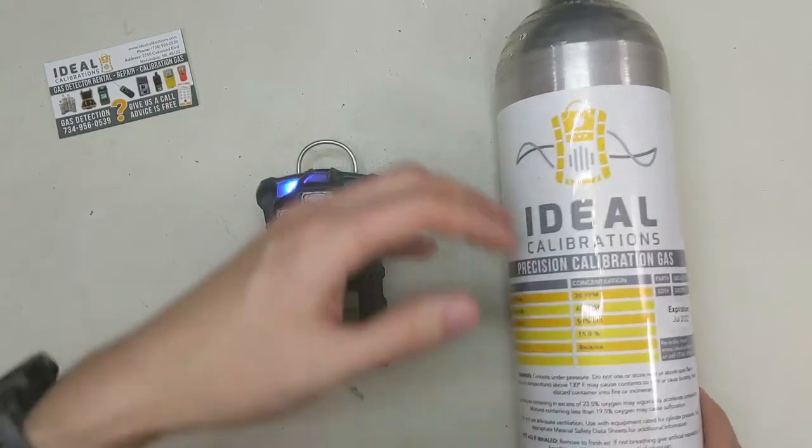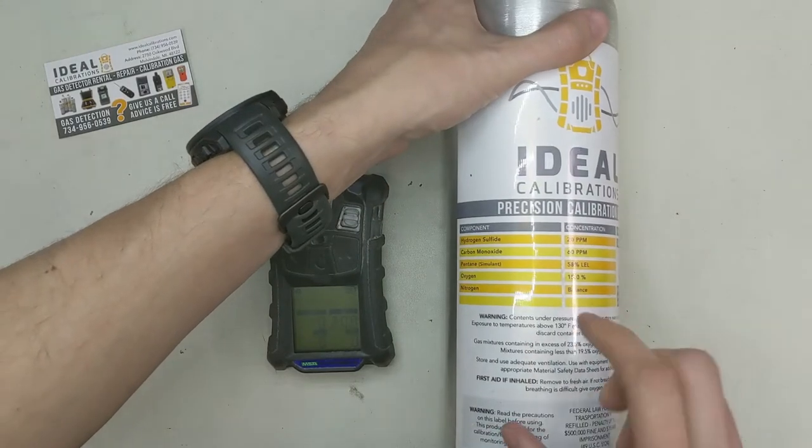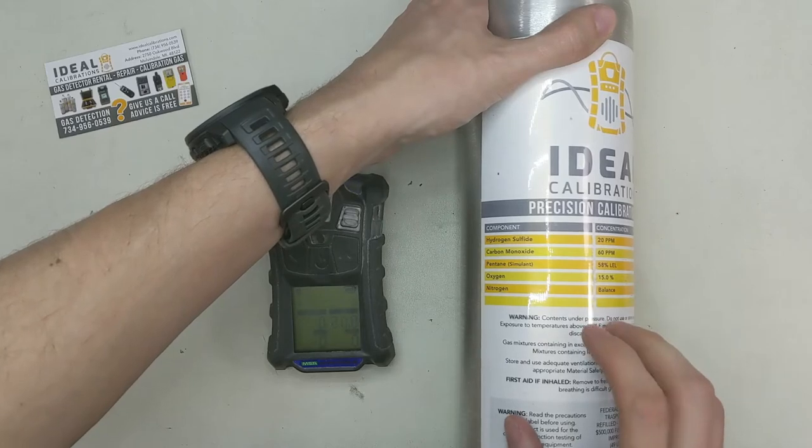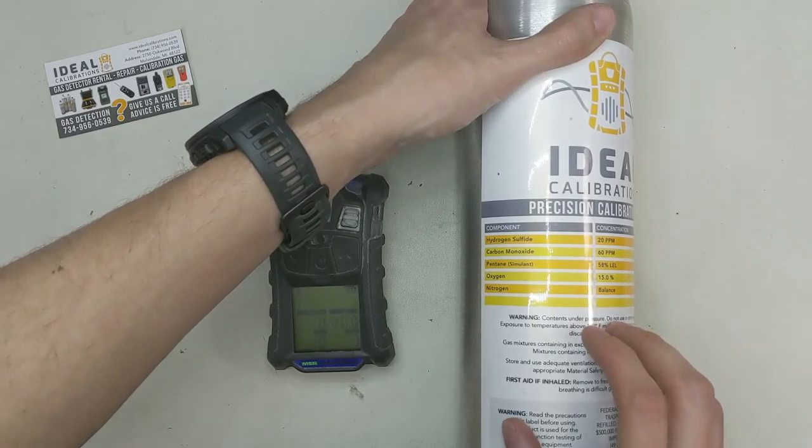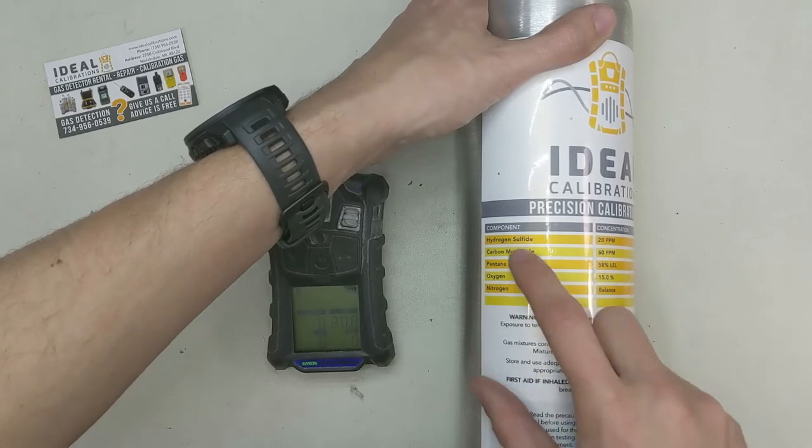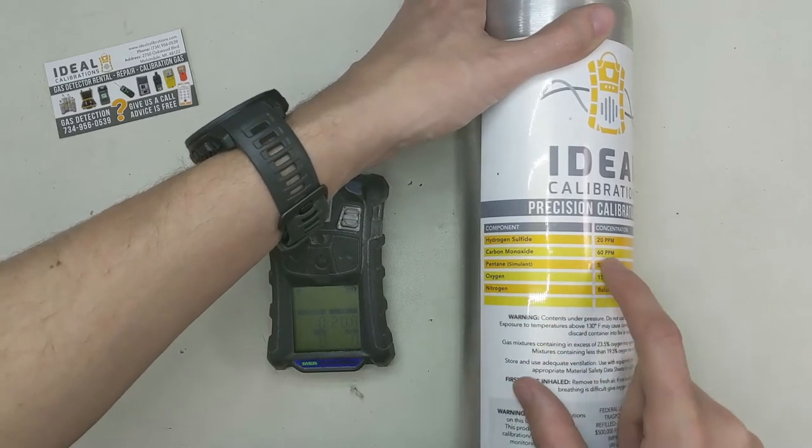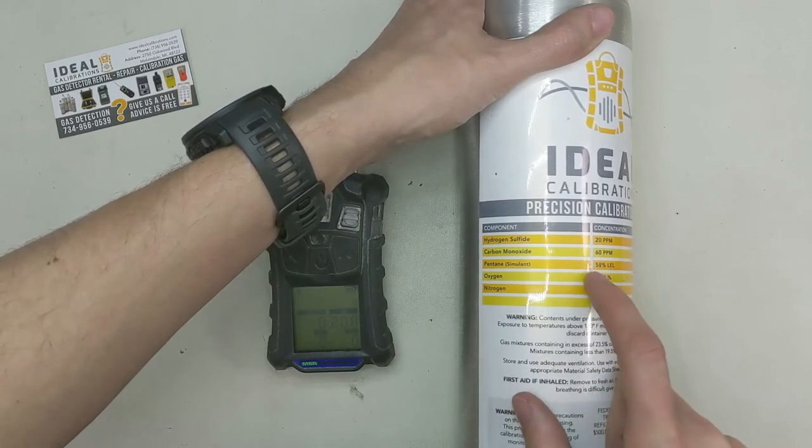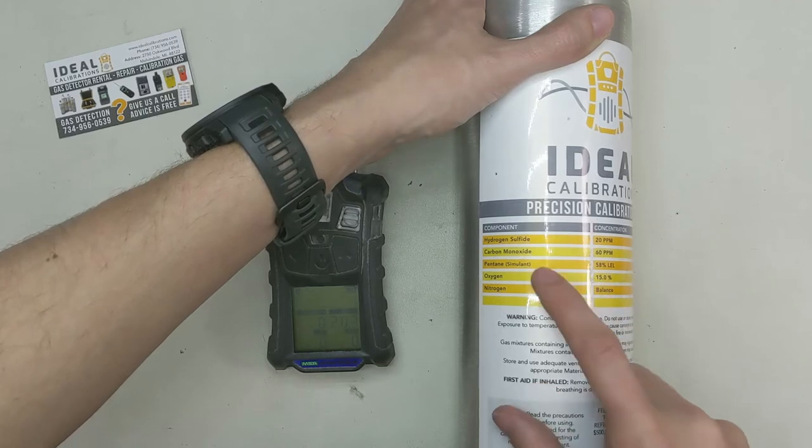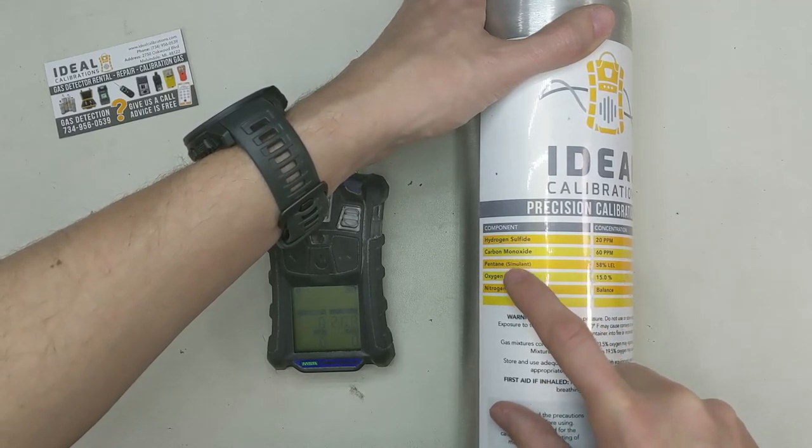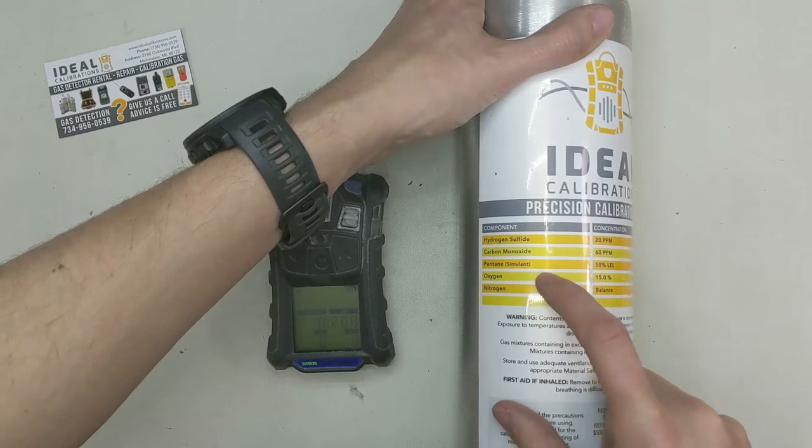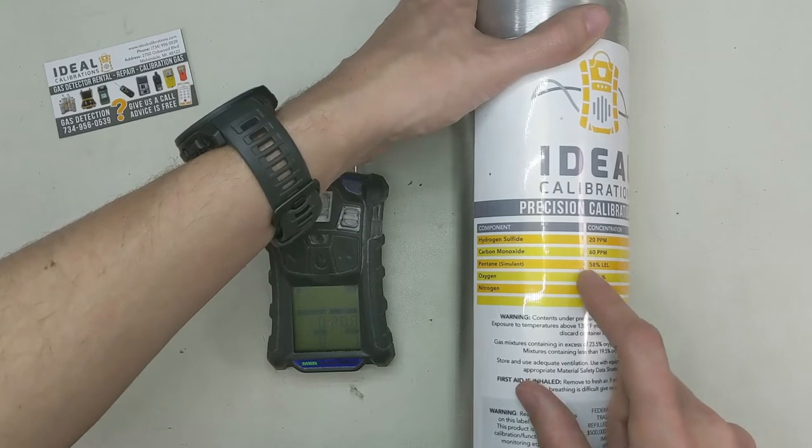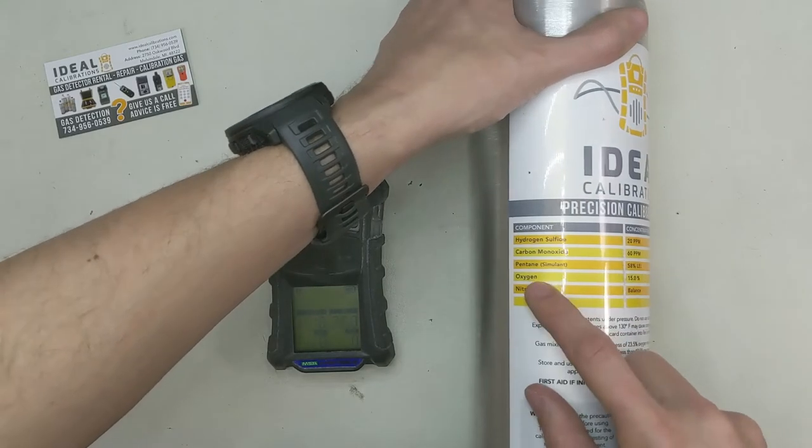Speaking of the gas, let's make sure you have the right cylinder. First thing to do is to check your components and make sure that they line up here with what we've got for it. So this is the default from MSA. If you've changed any of this, then you're going to need different calibration gas. But this is how it comes from the factory. So you have hydrogen sulfide 20 parts per million, carbon monoxide 60 parts per million, pentane simulant 58% LEL. Yours might say pentane simulant and it might say methane underneath that, and it would say at 29% LEL or 1.45% by volume. Either way, that's what we're looking for. In this case, those are all the right thing.